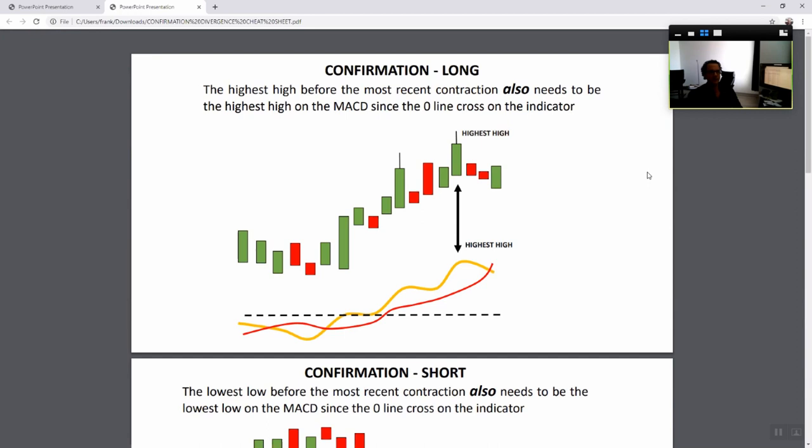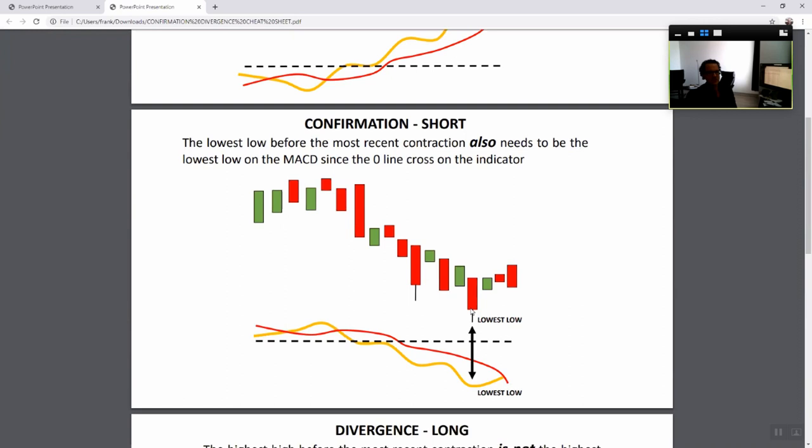Confirmation long: highest high in price with the highest high in your cycle indicator, whatever length it is. Confirmation short: just the opposite, just as you see here.